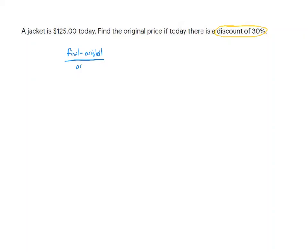Divided by the original should give you the percent change over 100. And we've got these numbers, right? We have the final price, that's the price today. Now I know that's the final price because it's asking for the original price. So X here is the original price.